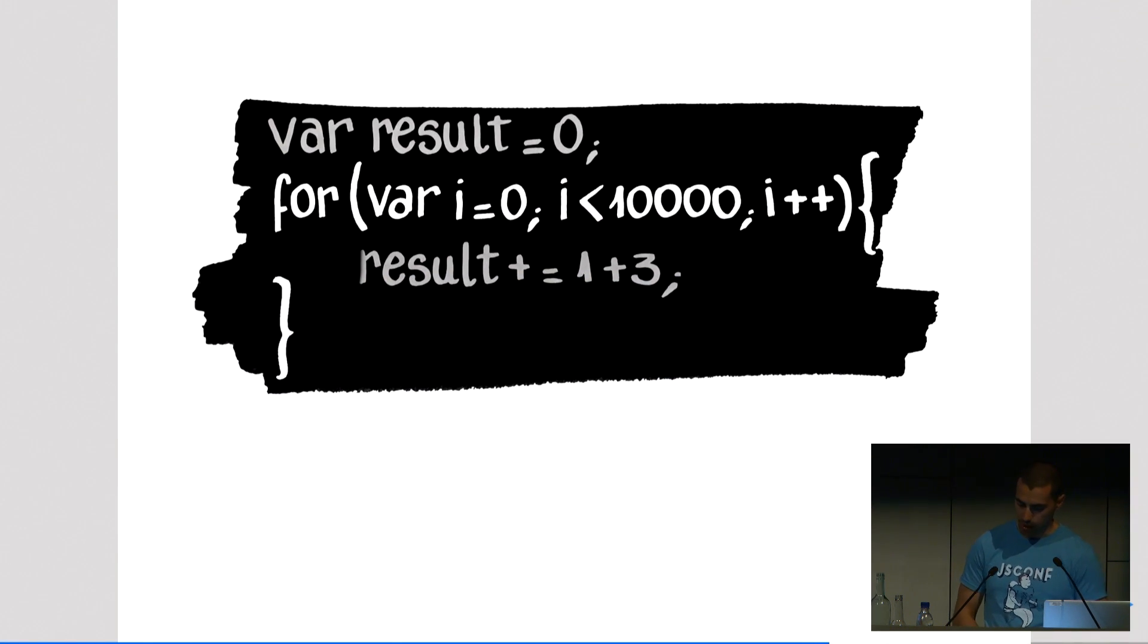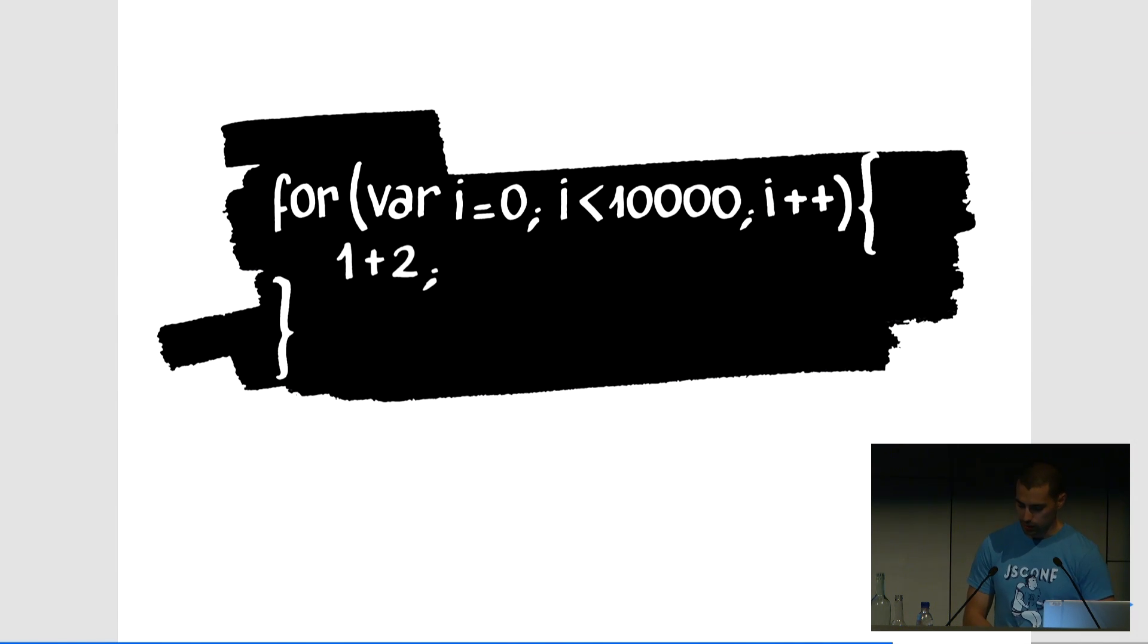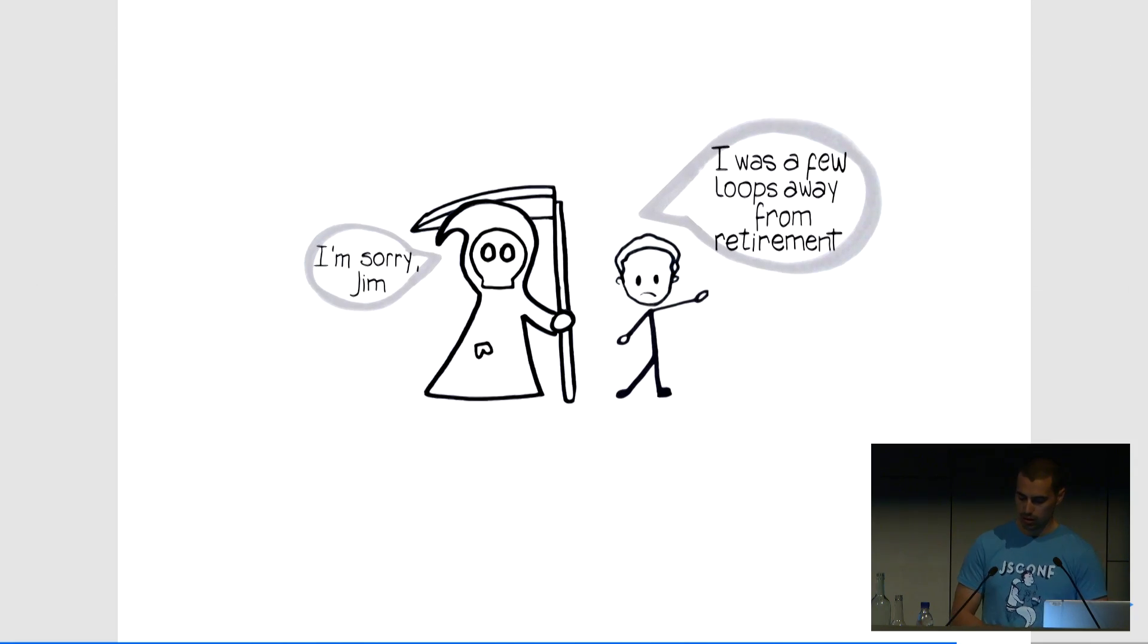Let's continue with the next optimization. Imagine a loop with just an expression. It could be any expression you want, but if it doesn't have side effects, like assigning the result to a variable or returning the result, it could be optimized by just avoiding doing anything at all. And that's what the compiler will do internally, just remove the expression. This optimization is called dead code elimination. And some compilers, like the JVM, would go further and delete the whole loop.